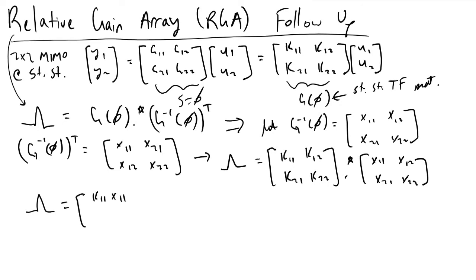Our relative gain array will now be k11 x11, k12 x21, k21 x12, and k22 x22.